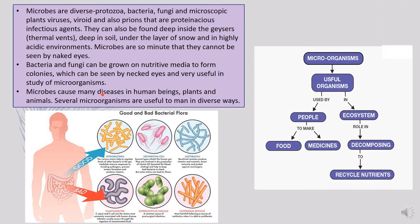Microbes are of different kinds, as seen in the previous chapter: protozoa, bacteria, fungi, microscopic plants, viruses, viroids, and prions — proteinaceous infectious agents. Viruses, viroids, and prions are pathogenic; no significant usefulness of these has been found so far. They are responsible for causing different types of diseases in plants and animals.